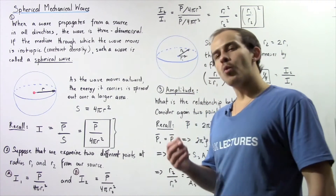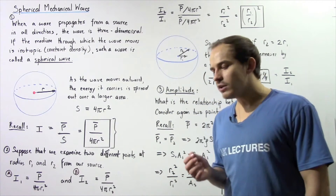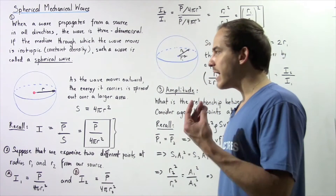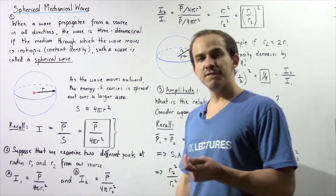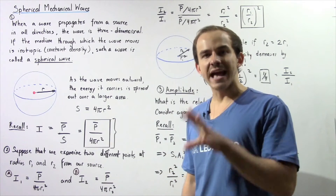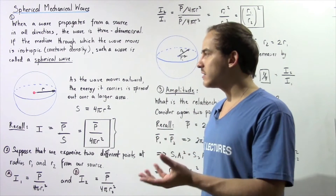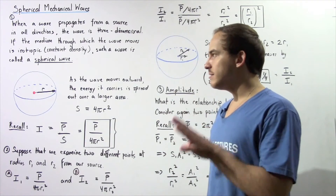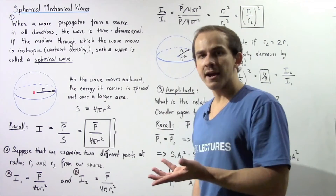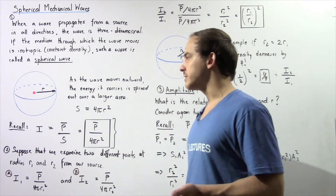One example of a spherical wave is a sound wave. If I snap my fingers, the snap creates a sound wave, and that sound wave is a spherical mechanical wave. This means we are assuming that the medium, which is air, is isotropic — and that's a pretty accurate assumption.